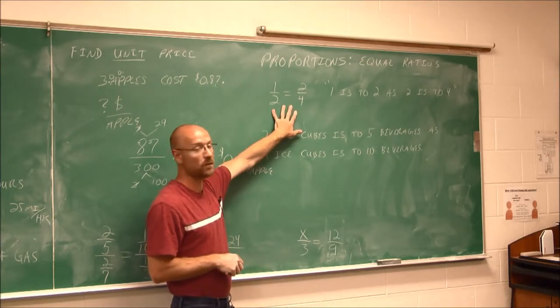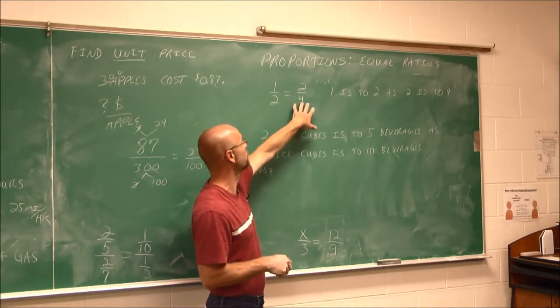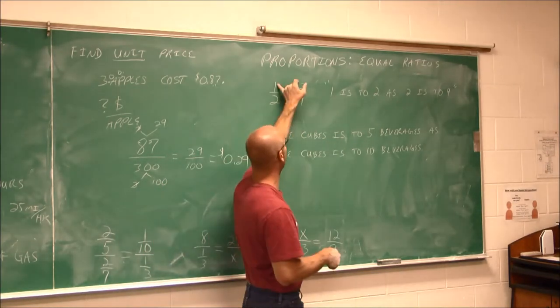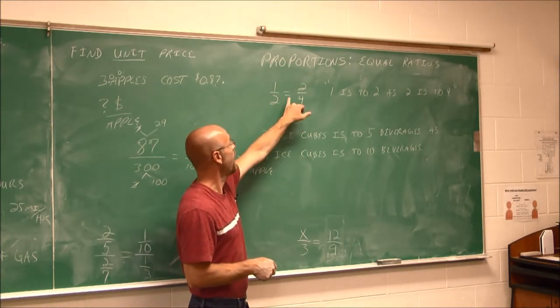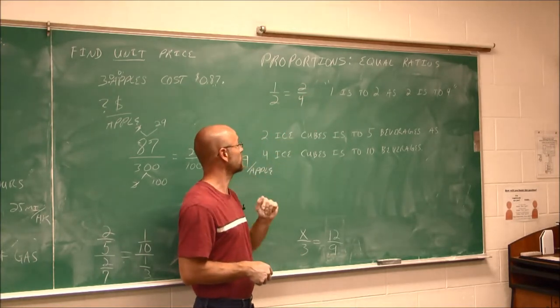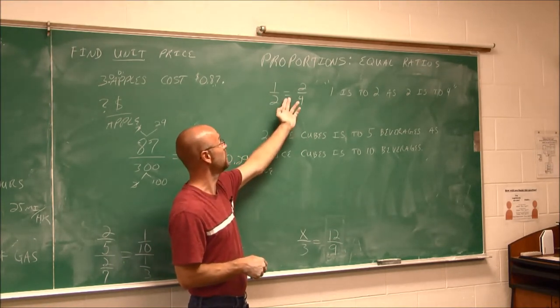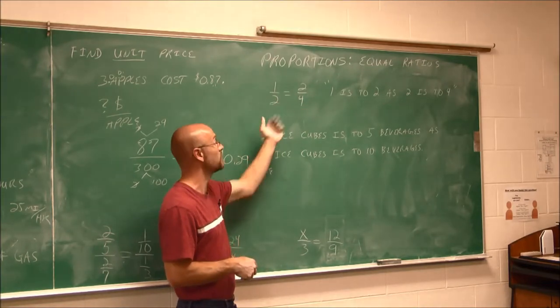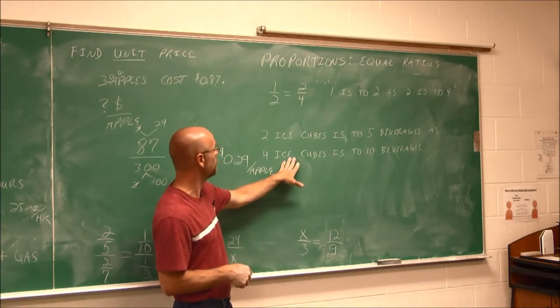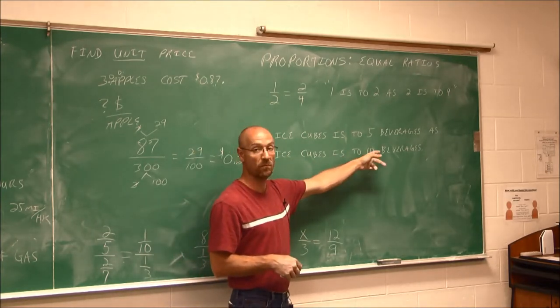Here's an example we've seen several times. We have 1/2 equals 2/4. We know this is true, 1/2 is 2/4, because 2/4 would reduce to 1/2. But we read it as 1 is to 2 as 2 is to 4. So by using that translation, try to convert this to a proportion, where we have a fraction equal to another fraction. That is our equal ratios definition of a proportion. So try this one on your own. 2 ice cubes is to 5 beverages as 4 ice cubes is to 10 beverages.